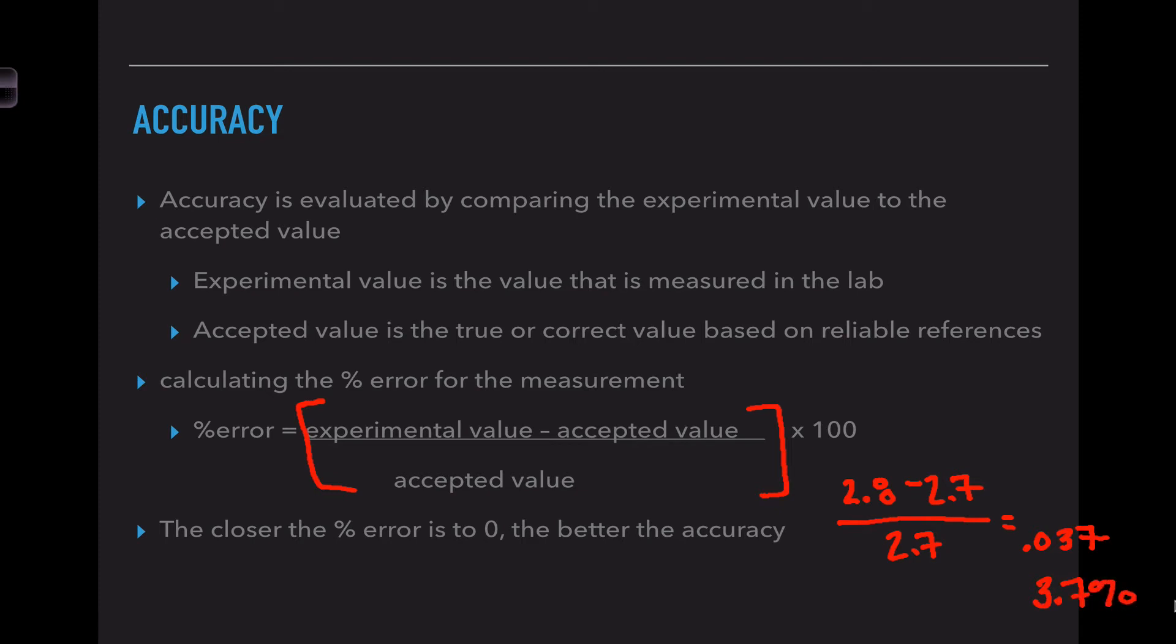The closer that the percent is to 0 tells us that we have a more accurate measurement. If the percent is 94%, we are completely off base and need to retake our measurements. Percent error is something you will be calculating in different labs. I don't expect you to memorize the equation - you can look it up when needed. But remember, the smaller the percent error, the more accurate our measurement is.